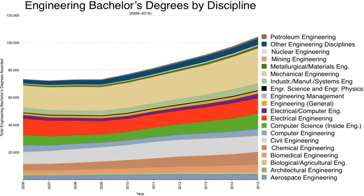Graduates holding the Magister Inżynier degree can begin four-year doctorate studies (Ph.D.), which require opening doctoral proceedings, carrying out research, passing exams (e.g., foreign language, philosophy, economy, leading subjects), and writing and defending a doctoral thesis. Some Ph.D. students also teach undergraduate (BSc/MSc) students. The graduate of doctorate studies at a Technical University holds the scientific degree of Doktor Nauk Technicznych (Dr. Inż.) — literally Doctor of Technical Sciences — or specializations such as Doctor of Chemical Sciences.